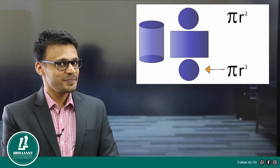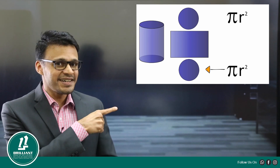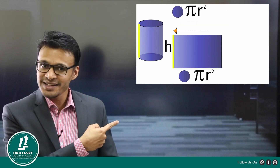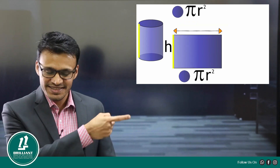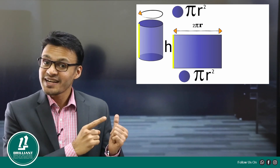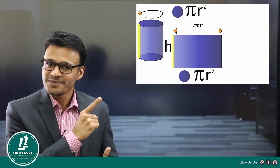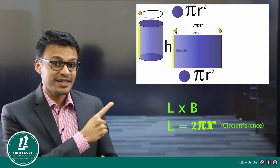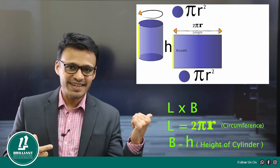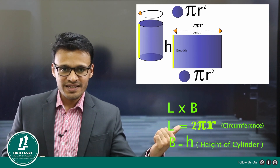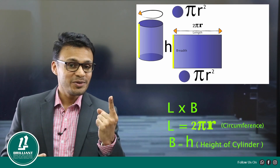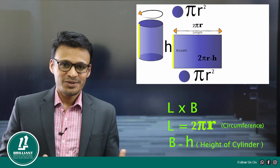The area of each circle is πr². In the middle we can see a rectangle. The breadth of the rectangle is the height of the cylinder. The length of the rectangle is the circumference of the circle. So the area of that rectangle is circumference of the circle into height — that is 2πr into h.